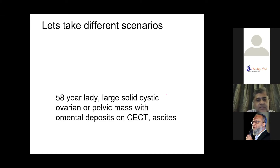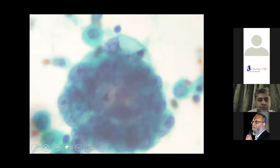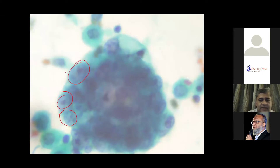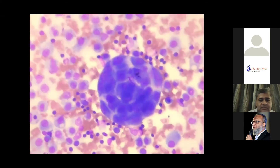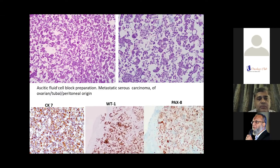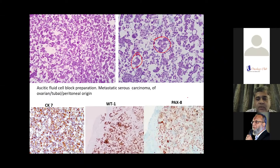Let us take a case scenario: a 58-year-old lady with a large solid cystic ovarian pelvic mass with omental deposits and ascites. First, we do an ascitic fluid tap. This shows a ball-like cluster of malignant cells with a very high NC ratio — clearly a high-grade malignant tumor. A GIEMSA stain highlights this ball of tumor cells; the background shows mesothelial cells. We then do a cell block preparation, processing the cytology fluid like a histology section. The adenocarcinoma glands are seen in the cell block, and to find out whether it is Müllerian origin, we use PAX8 as a marker — a good marker for Müllerian origin. WT1 is a serous marker, and CK7 is a marker of epithelial origin.